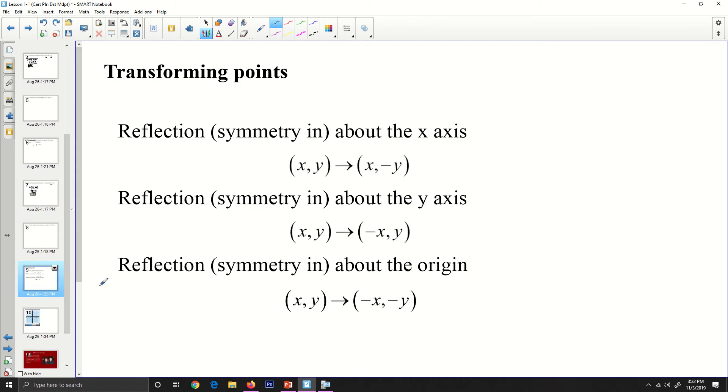Transforming some points, just some reflections here. Reflection or symmetry about the x-axis means for every point x, y, we will also have the point x, negative y. If we have a reflection or symmetry about the y-axis for every point x, y that we have, we will also have the point negative x, positive y. If we have symmetry about the origin, any point x, y, we will also have the point negative x, negative y.